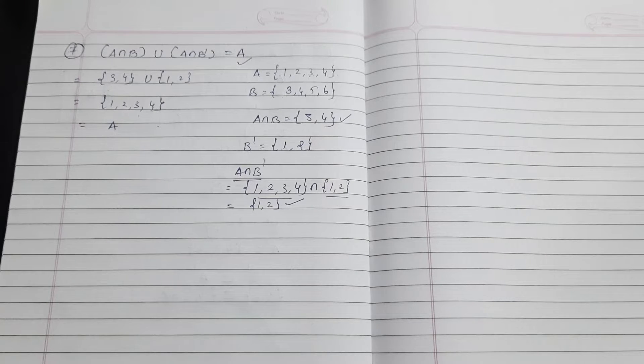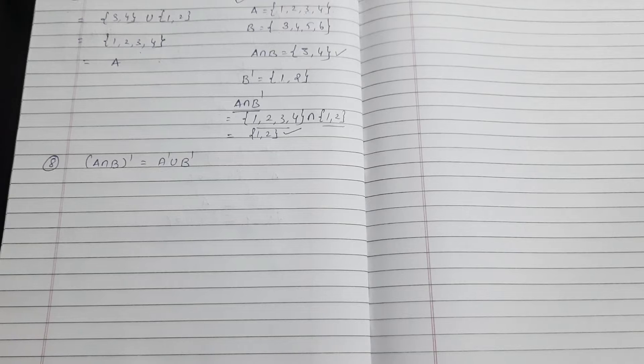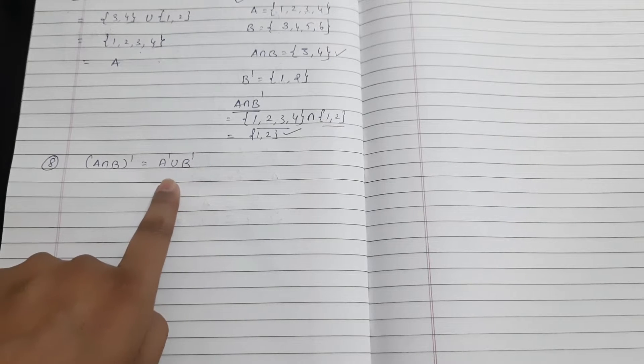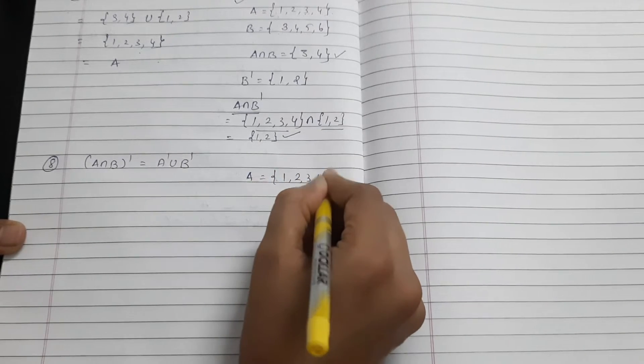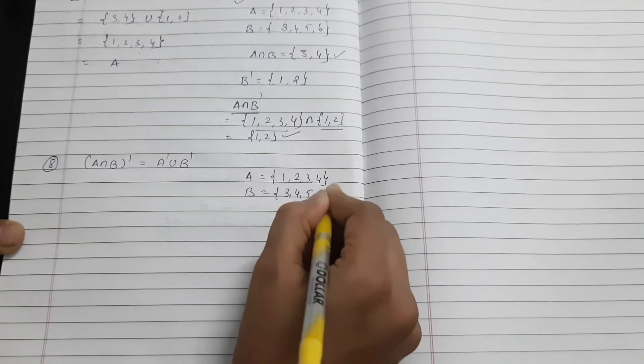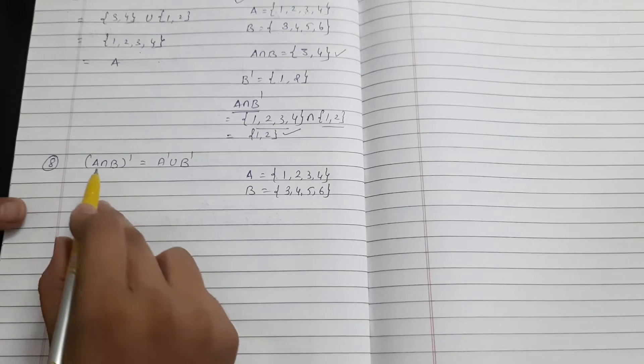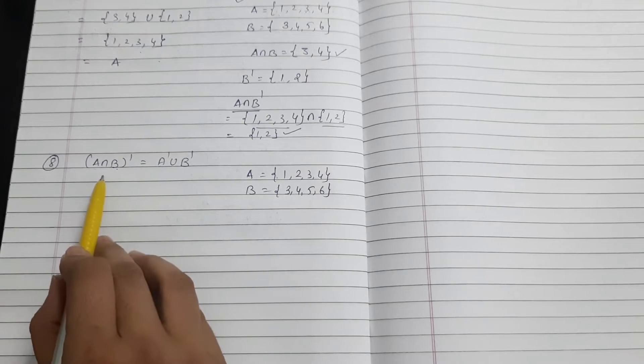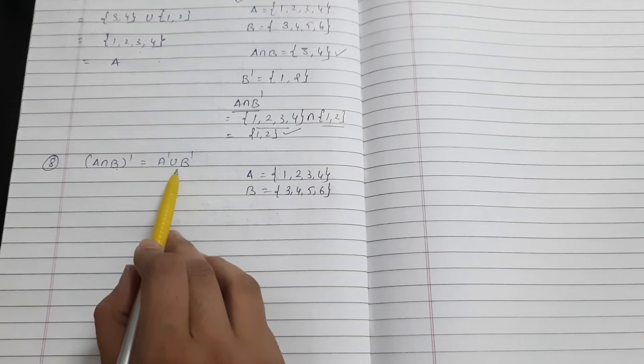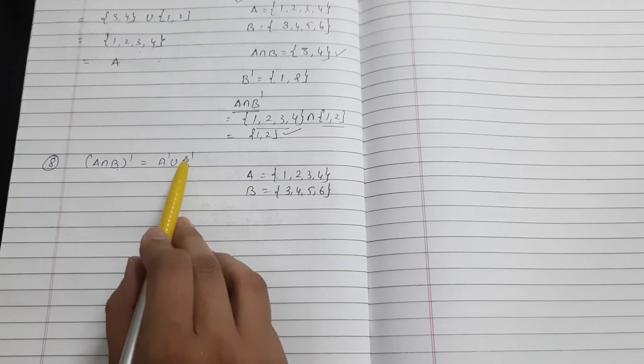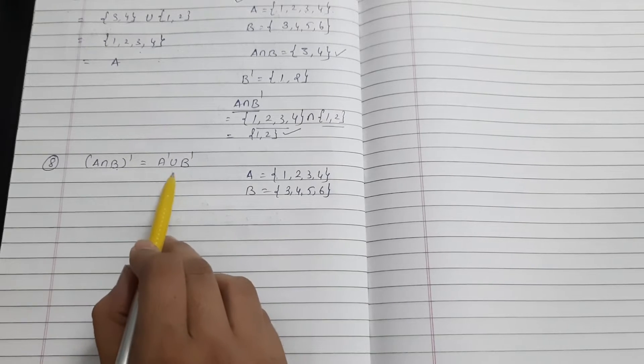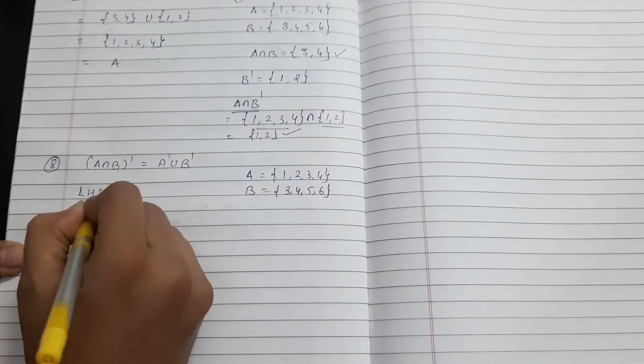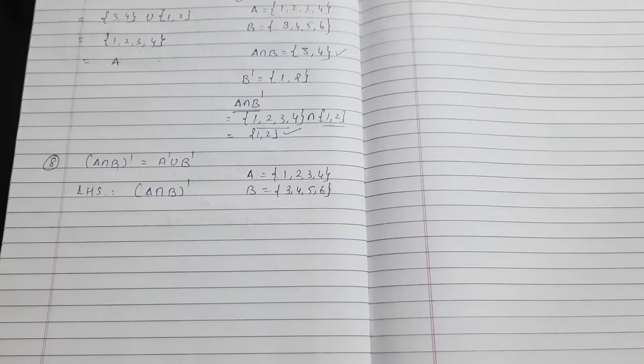Now moving towards the next property. The eighth property is A intersection B and then its complement, equal to A complement union B complement. This property is actually De Morgan's law. Start with example: A equals {1, 2, 3, 4} and B equals {3, 4, 5, 6}. Some elements are common between both.